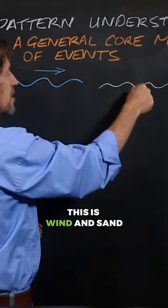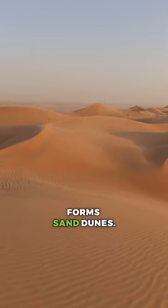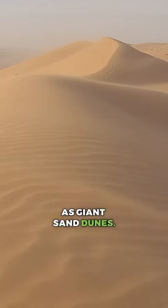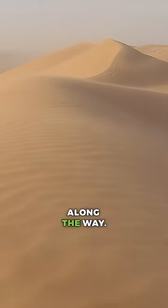This is wind and sand - it forms sand dunes. They start off as little ripples and end up as giant sand dunes. There's a few gradations along the way.